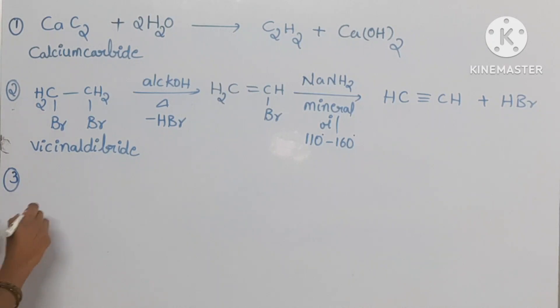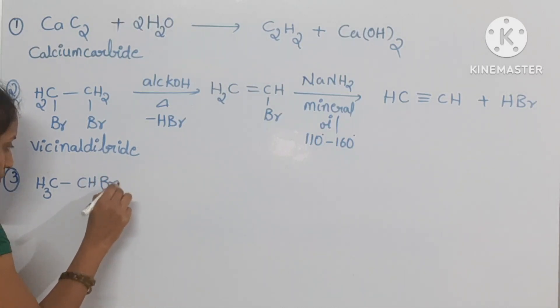And the third preparation method is gem dihalides, CH3CHBr2. Here also the same reagents we should use.